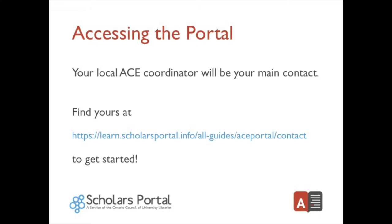Accessing the portal. When you receive the URL link and your unique access code from your accessibility staff, you are ready to access the ACE repository. Remember to save this token in a secure place so you can easily find it when you need to login, and never share your token with anyone. If you do not have a token or have lost yours, please contact your local ACE coordinator.